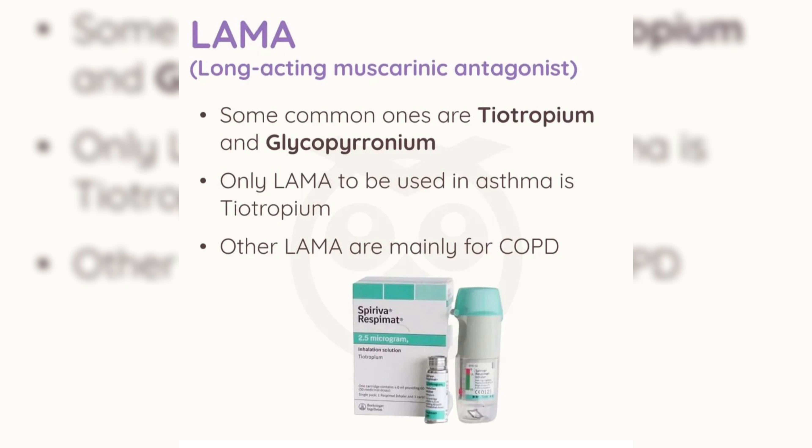Long-acting muscarinic antagonist, LAMA. Some common ones are tiotropium and glycopyrronium. Only the LAMA to be used in asthma is tiotropium; other LAMAs are mainly for chronic obstructive pulmonary disease.